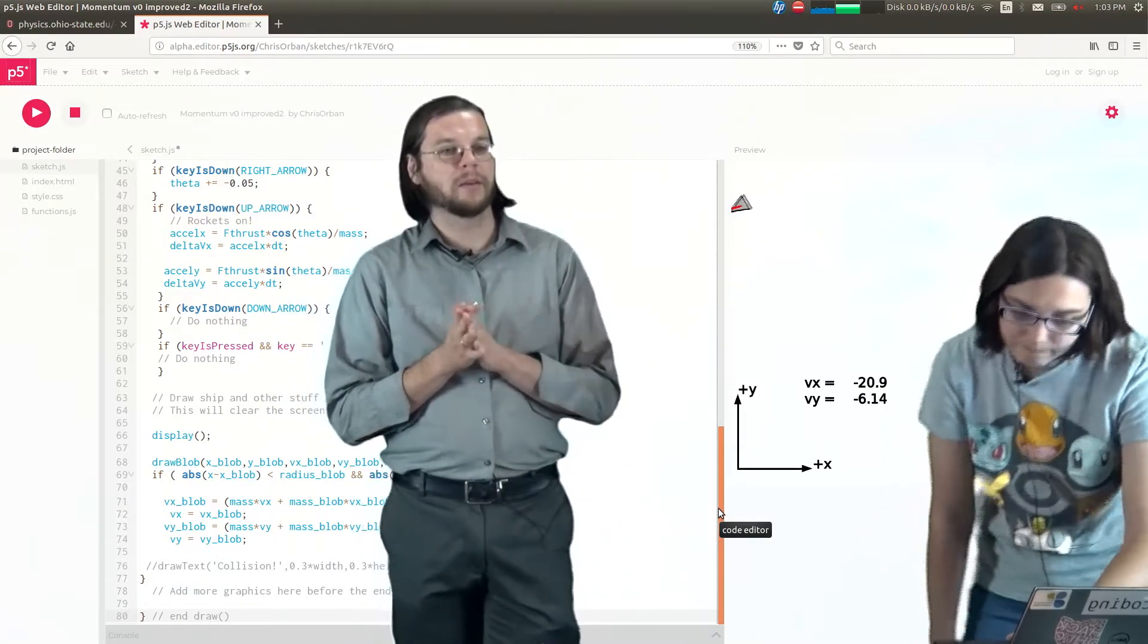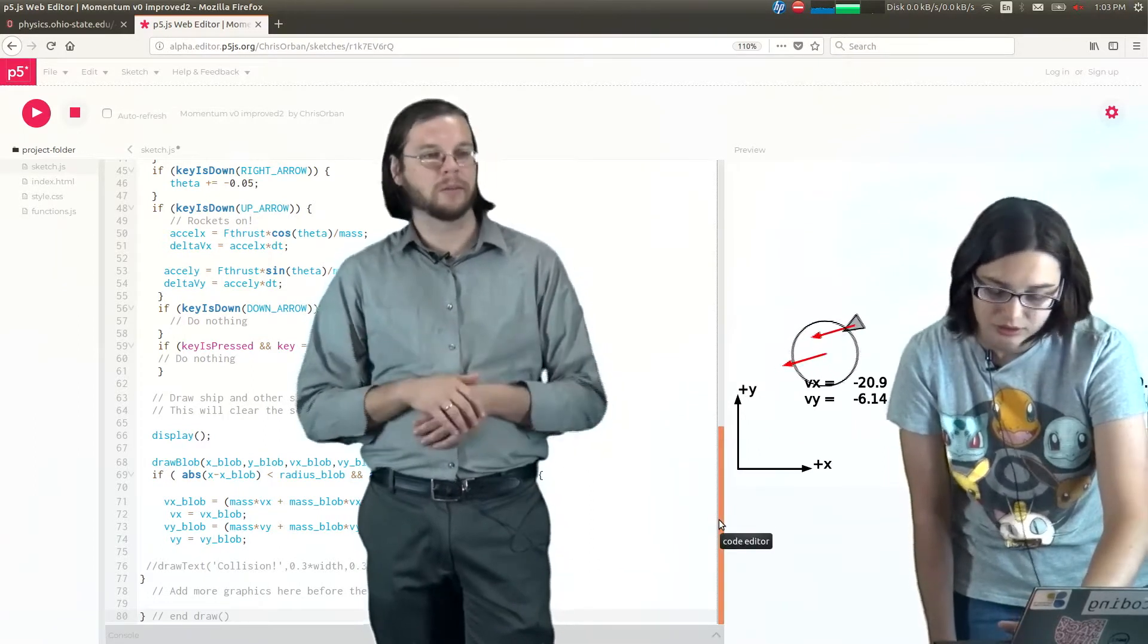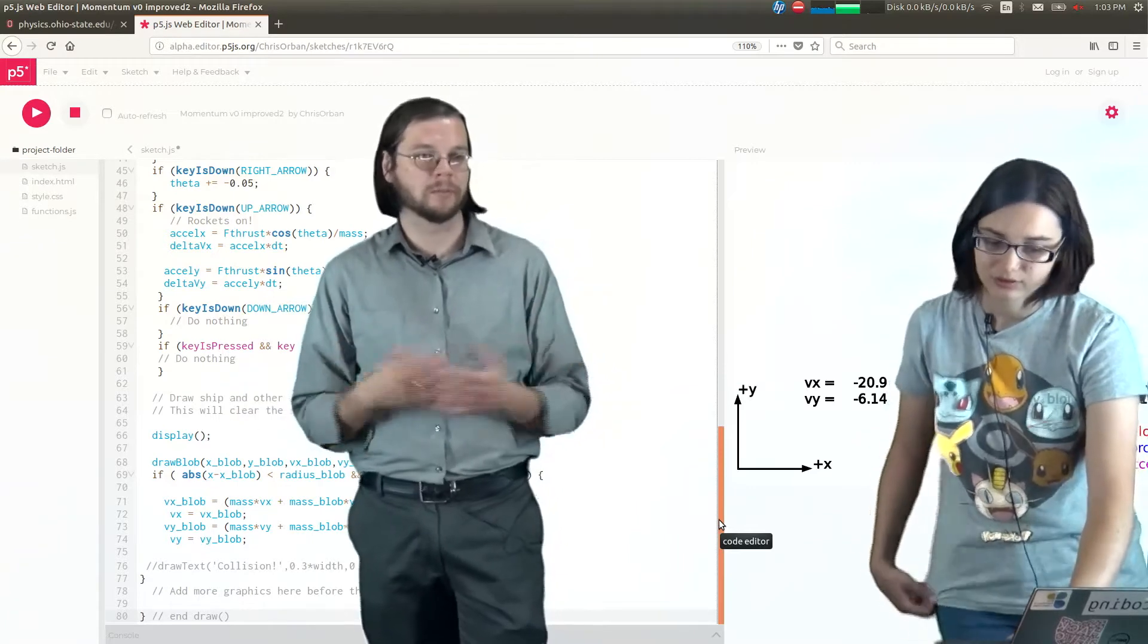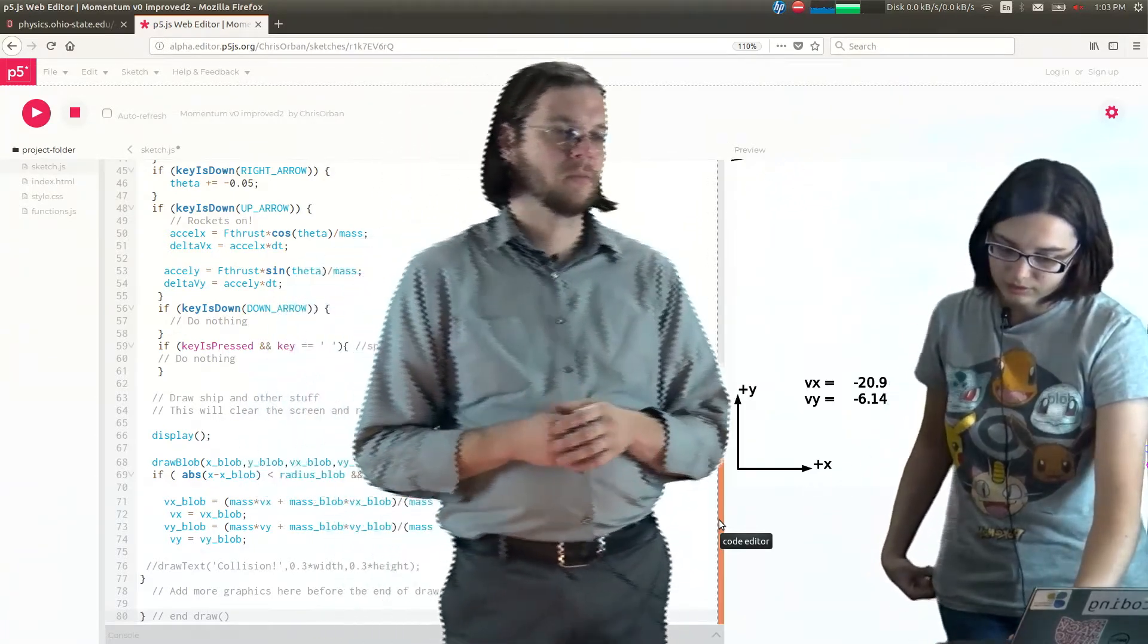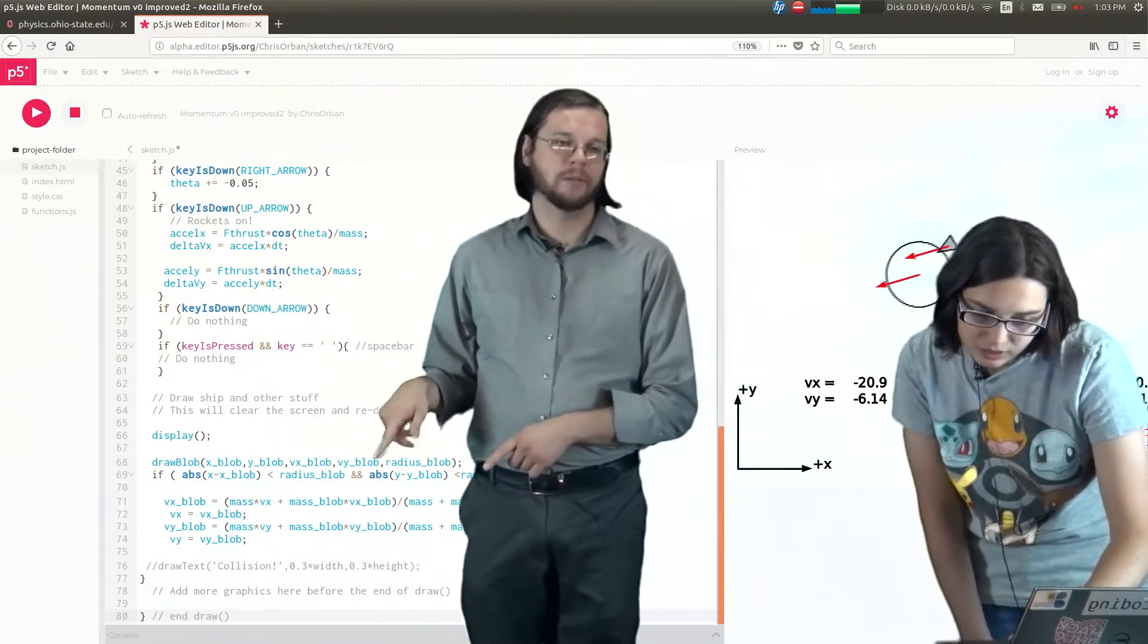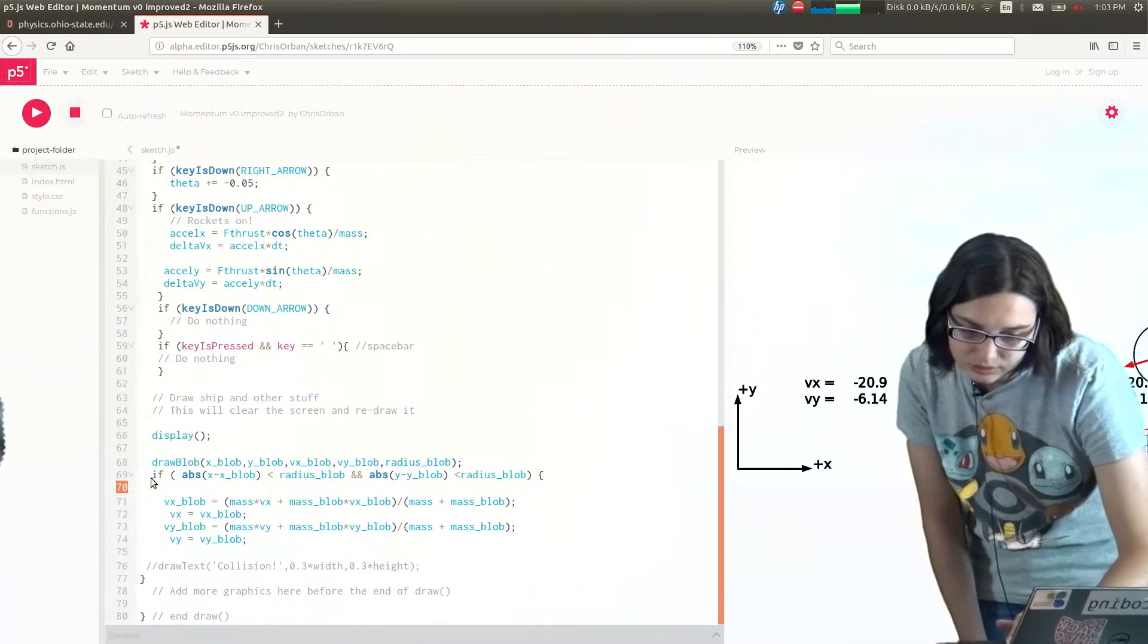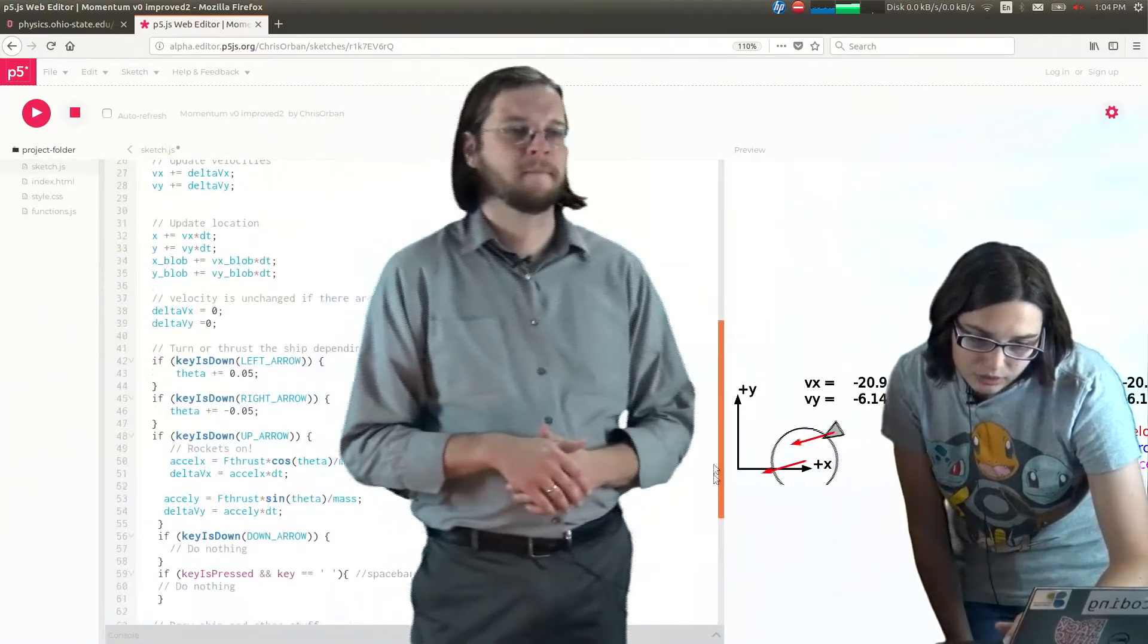What you could do is you could add a variable to the beginning and say is collided equal false, and then set it equal to true, and if it's equal to true then you don't let them separate. Right. Another way to do it is to copy this if statement here. And we're going to take it up to the update location section.